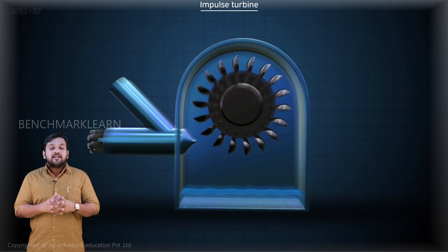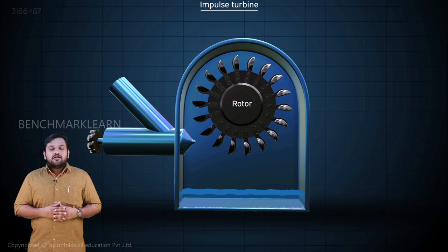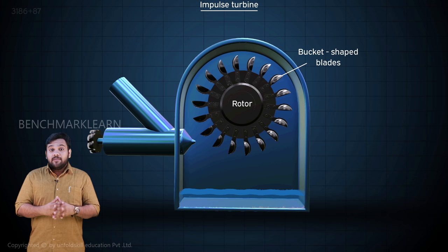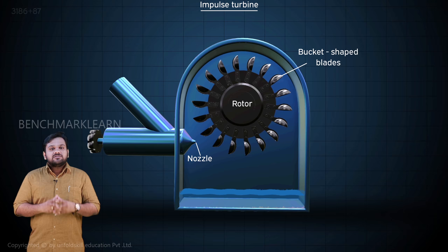The best and foremost example of an impulse turbine would be the Pelton wheel. The Pelton wheel consists of a rotor with bucket-shaped blades attached along its periphery. The blades are fixed in such a way that the distance between each one is of particular proportions. A nozzle creates a jet of high velocity and is used to point the flow of water towards the blade in a particular direction.